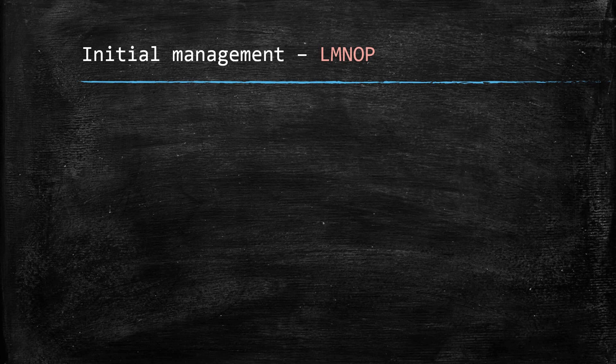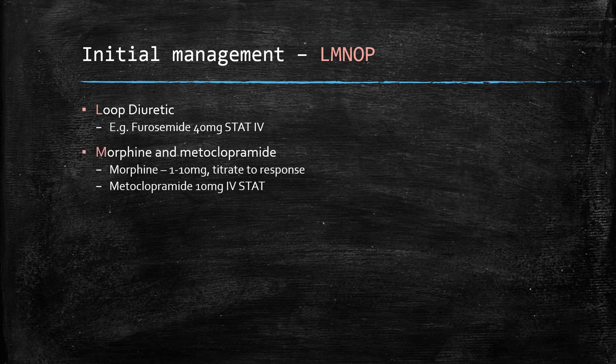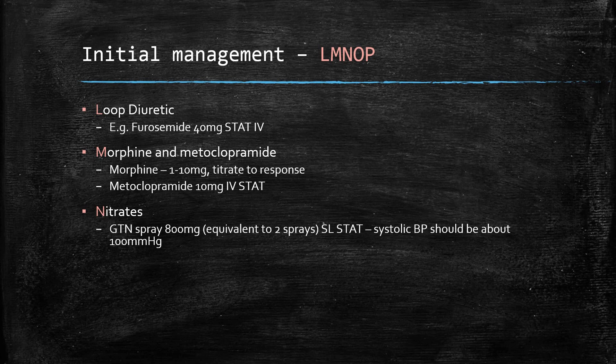Moving on to initial management of acute left ventricular failure using the mnemonic LMNOP. We would give a loop diuretic — furosemide 40mg stat via IV — to help with the oedema. This is followed by morphine, 1mg up to a maximum of 10mg, titrated to the response of the patient, and metoclopramide 10mg IV stat. N is for nitrates: we would give 800 micrograms — two sprays — sublingual stat, but we would also want the systolic BP to be above 100mmHg to avoid hypotension.